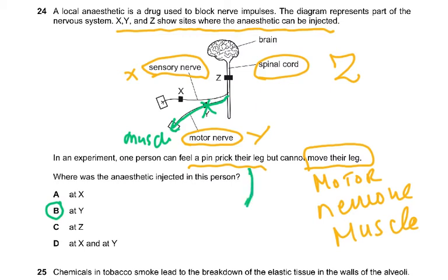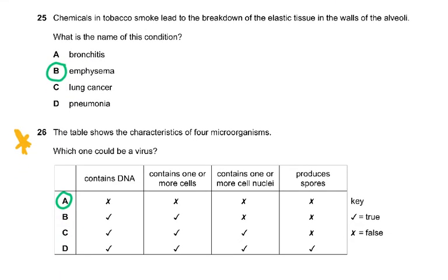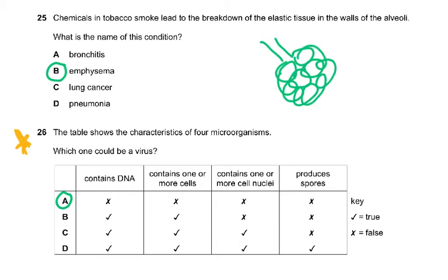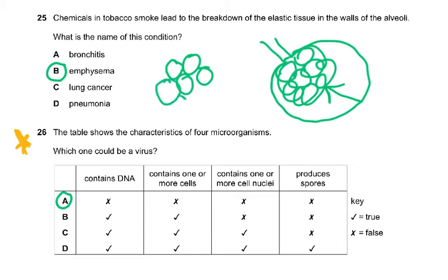Question 25: Chemicals in tobacco smoke lead to the breakdown of elastic tissue in the walls of the alveoli. The alveoli are like a bunch of grapes — when you inhale, the elastic tissue stretches and then recoils. The name of the condition in which there is breakdown of elastic tissue is emphysema. All the small alveoli merge into one big alveolus, resulting in decreased surface area for gas exchange.